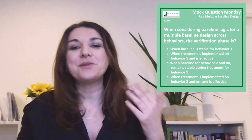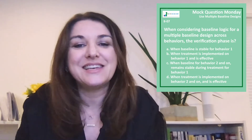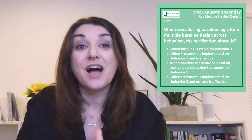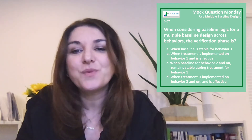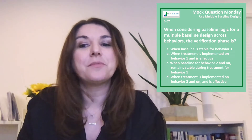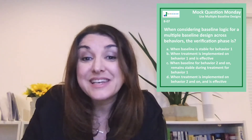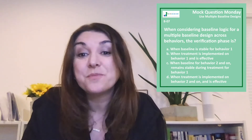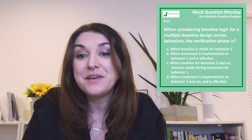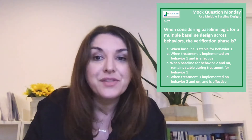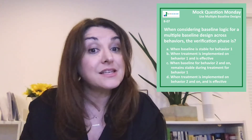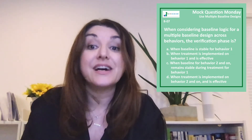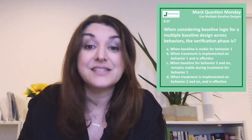The prediction phase in the multiple baseline design, which is option A, occurs when we see that stable baseline in behavior 1. What that equals is those predictable levels of behavior without the independent variable — basically, if we don't treat this behavior, it's going to stay the same.